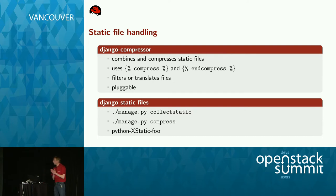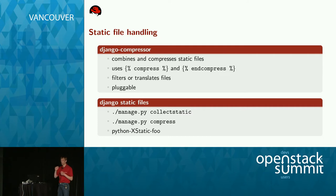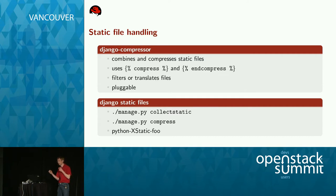Horizon also requires a Django application which is used to collect, compress, and concatenate all static files sent to the end user. JavaScript files are minimized, compressed, and concatenated to a single file — this application takes care of that. It can also be used to translate SCSS to CSS and so on. This is quite pluggable, so you don't need to worry about it.